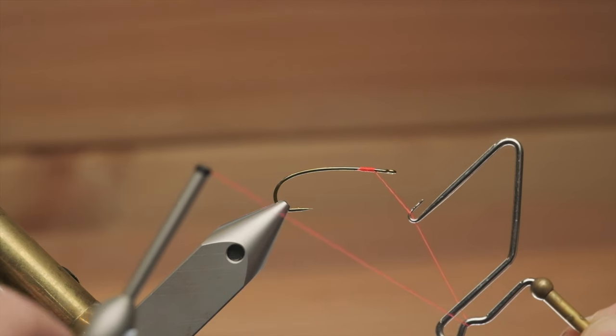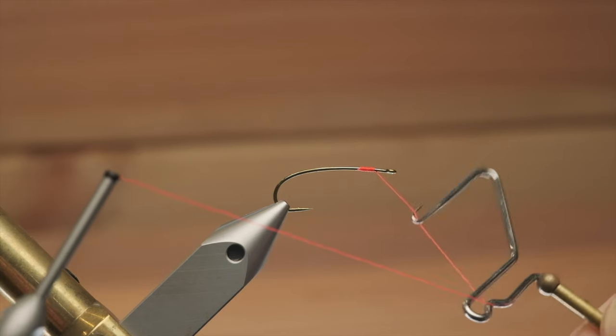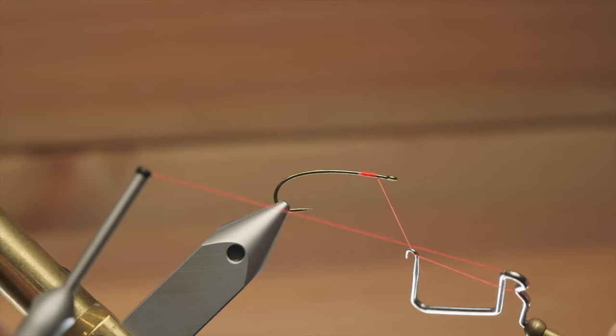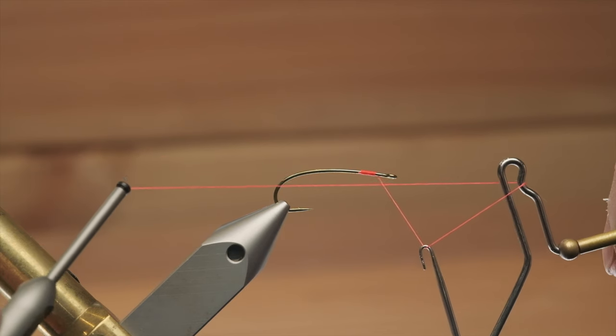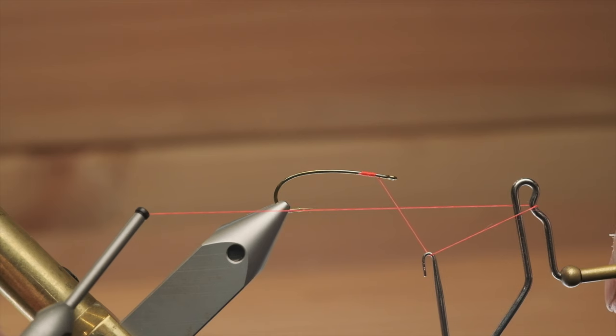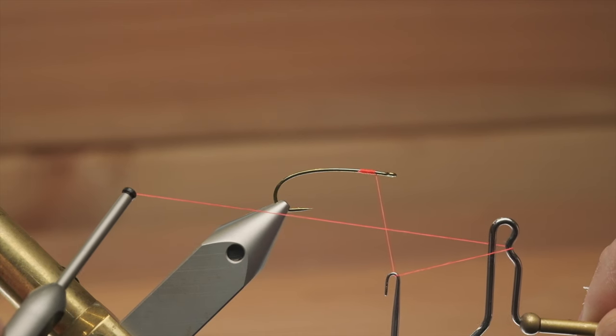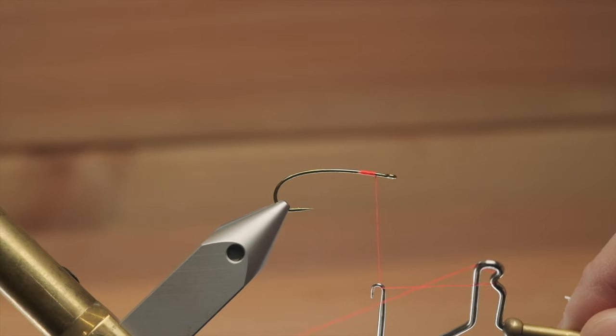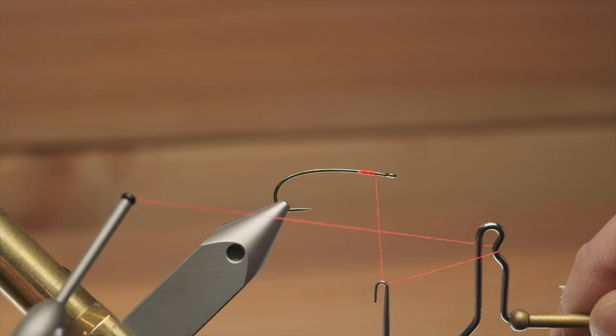Then you turn your whip finishing tool so that your tying thread is in a horizontal position. As you can see, I'm making the number four here. The thread that's coming off my hook is on the back and the thread that's coming off my bobbin is in the front.